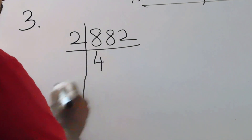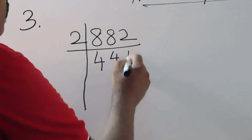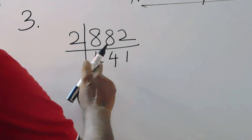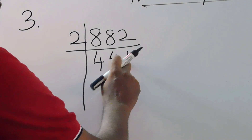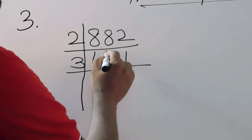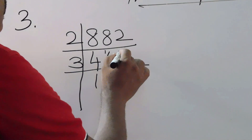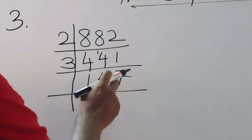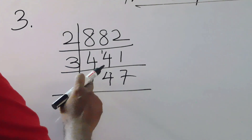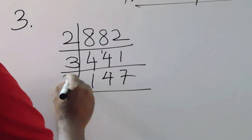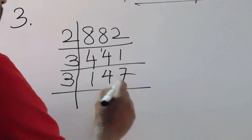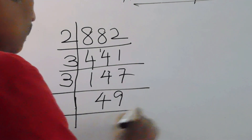Dividing 882 by 2 gives 441. Now, to find the next factor, add the digits: 4 plus 4 is 8, 8 plus 1 is 9. Since 9 is a multiple of 3, you can divide by 3. Dividing gives 147. For 147, adding digits: 1 plus 4 plus 7 gives 12, which is a multiple of 3, so divide by 3 again, giving 49.